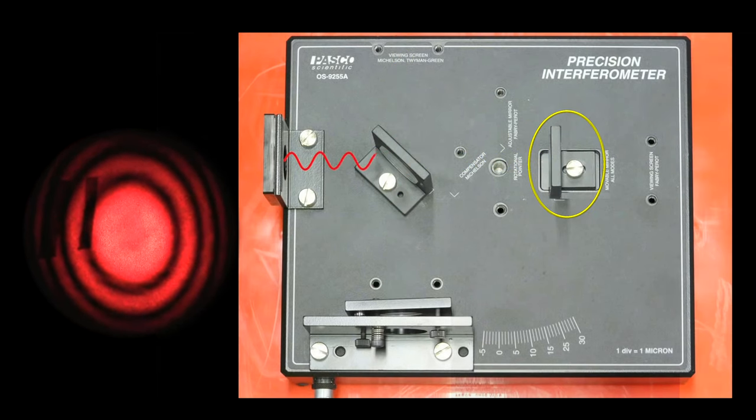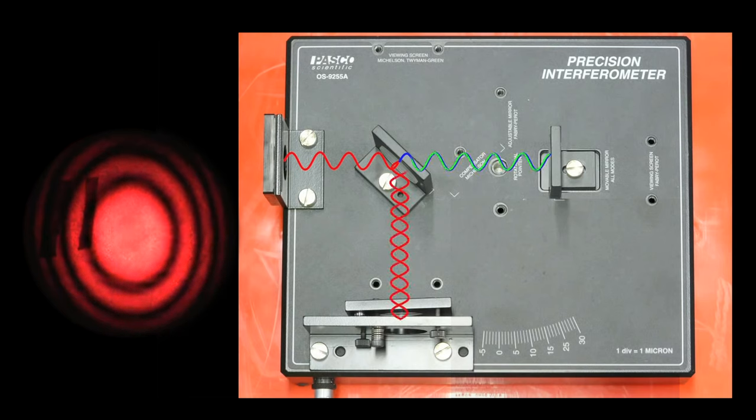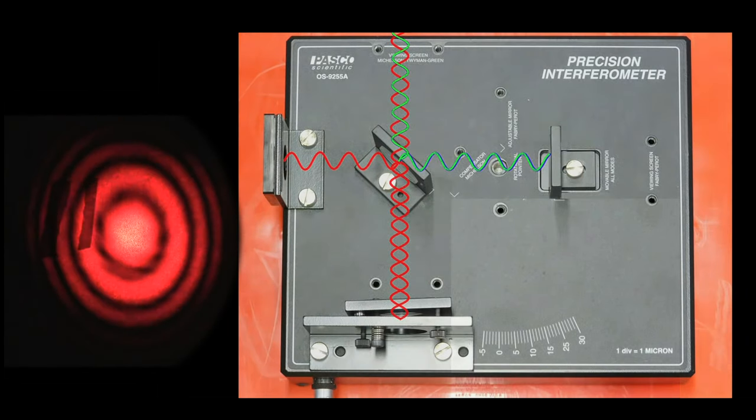If we move one of the mirrors by one quarter of a wavelength, that wave will have traveled one half of a wavelength less distance than the other one. This produces the maximum destructive interference. You can see the shift in the fringes from the bright to the dark.